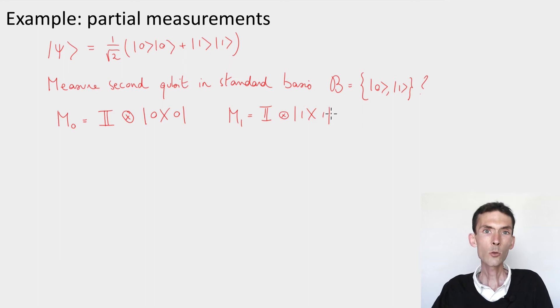Now I claim that these two matrices together form a valid POVM. Let's verify this. I need to check that M₀ and M₁ are positive semi-definite. And this is the case, because each of them is the tensor product of two positive semi-definite matrices. So that's positive semi-definite. And the second thing to check is that they add up to identity.